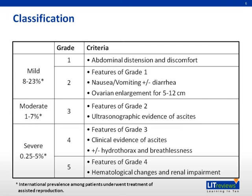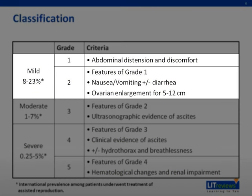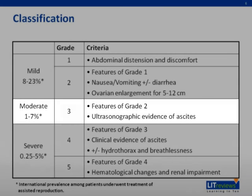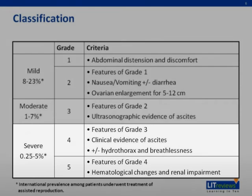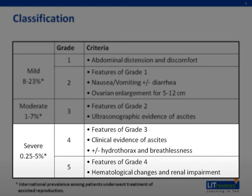Based on its clinical presentation, ovarian hyperstimulation syndrome is divided into mild, moderate, and severe. 8 to 23% of patients who undergo assisted reproduction treatment present with mild OHSS, 1 to 7% present with moderate, and 0.25 to 5% present with severe.